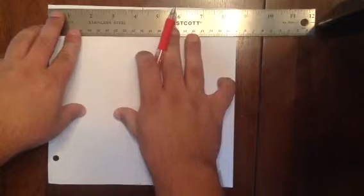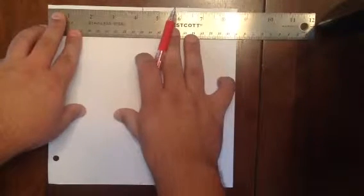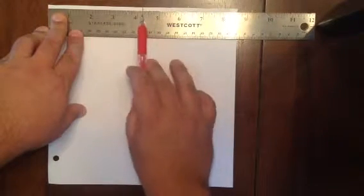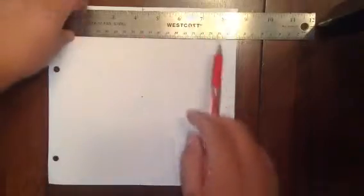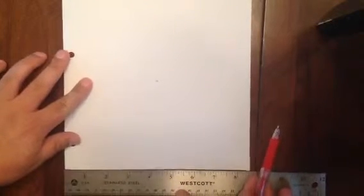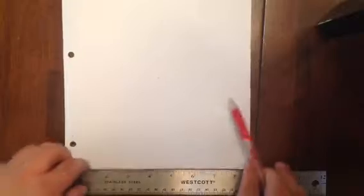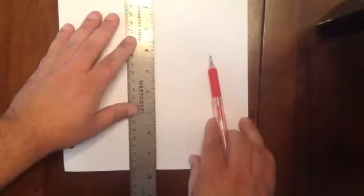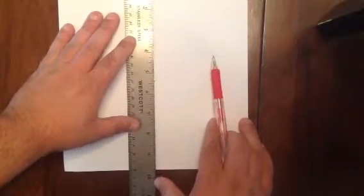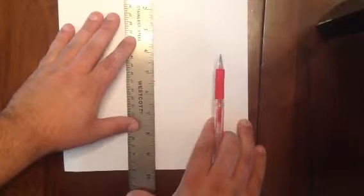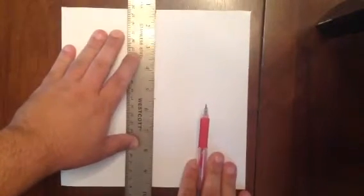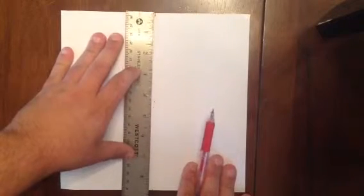To get the center of the page, I went four and a quarter along the top edge and marked it. I went four and a quarter along the bottom edge, which is about right there, and marked it. And so this is the middle. This splits it in half going long ways. And then I measured four and a quarter going this way.